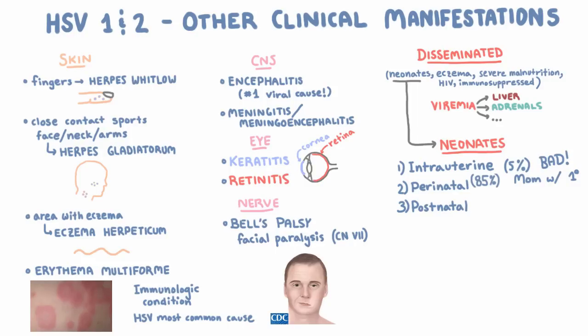85% of neonatal herpes occurs perinatally, and that's when the infant is exposed to HSV in mom's genital tract around the time of birth. Almost always, it's when the mom has a primary HSV2 infection, but remember that she doesn't actually have to have visible HSV lesions to be shedding the virus, and most cases actually occur in moms with no signs or symptoms.